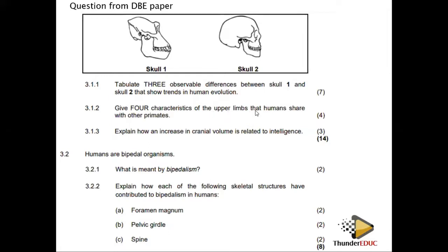Question two: give four characteristics of the upper limb that humans share with other primates. Upper limb only — opposable thumbs, flat nails instead of claws, free rotating arms. Make sure you read the question carefully. Question three: explain how an increase in cranium volume is related to intelligence. A bigger cranium accommodates more brain cells, which indicates greater intelligence.